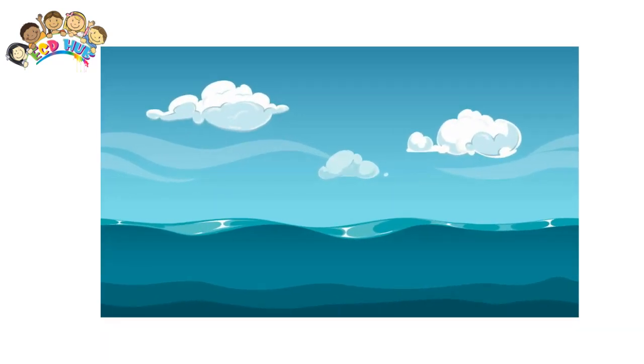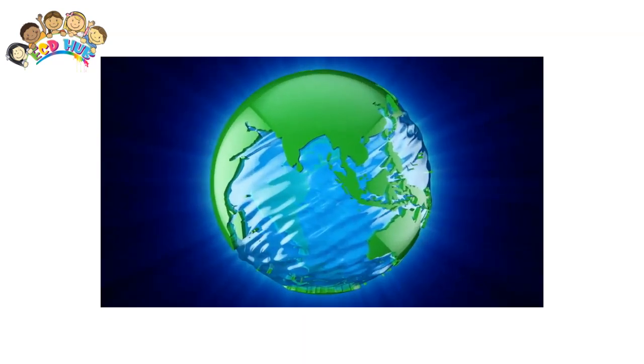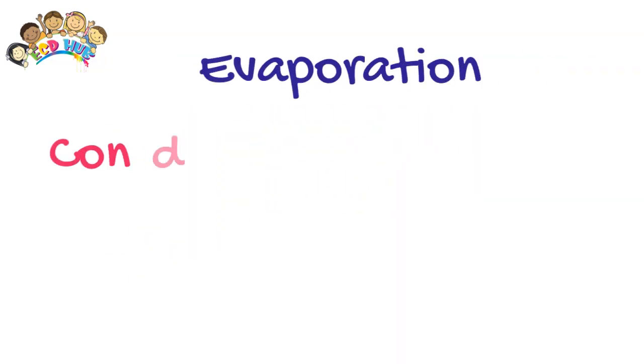Water on earth is constantly moving, changing state and being recycled. The water cycle describes this journey. There are four main stages in the water cycle: evaporation, condensation, precipitation and collection.